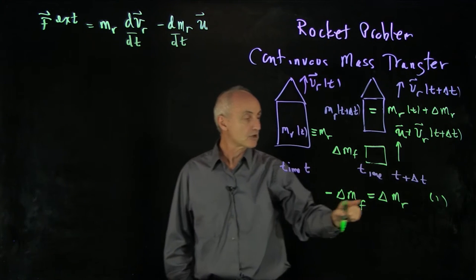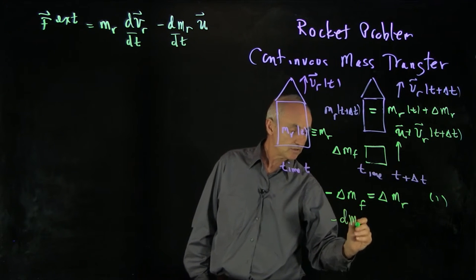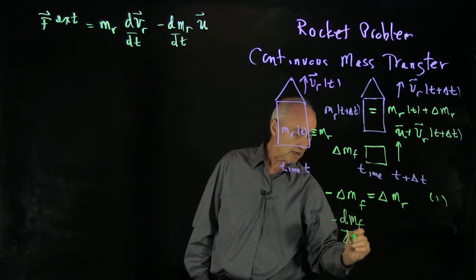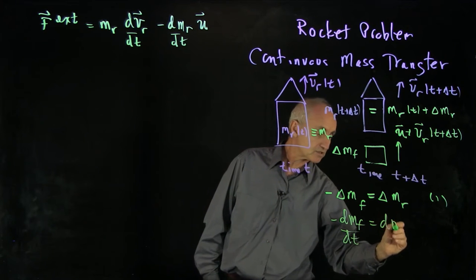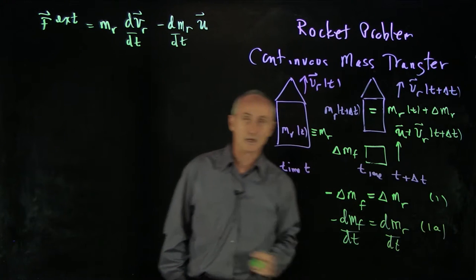From our mass conservation equation, we can rewrite this equation as a differential relationship that the change of mass of the fuel in time is equal to minus the change of the rocket. It doesn't matter which side we put the minus sign on.